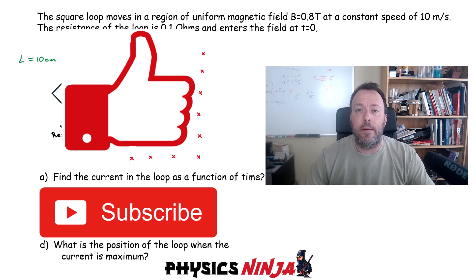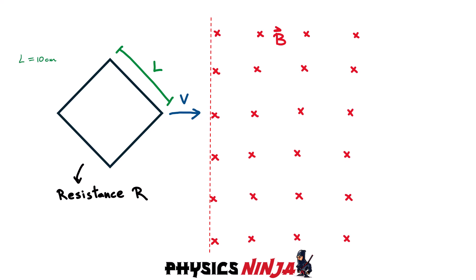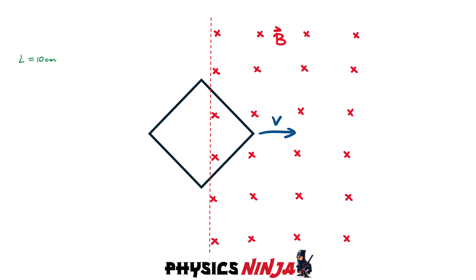All right, let's get started. Let's examine a little bit of the physics first. This loop is moving to the right and on the right side there is a magnetic field that is pointing into the page, denoted by these x values. Right now there is no current in that loop, but eventually you're going to start entering the magnetic field region and at some point the loop is going to look exactly like this.